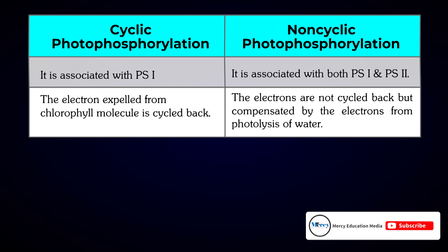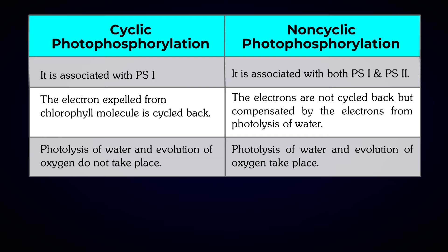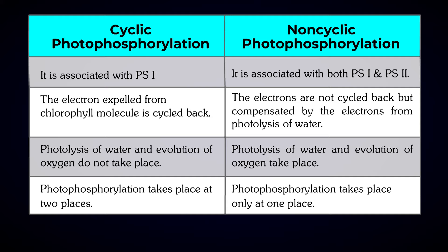In cyclic photophosphorylation, the photolysis of water and evolution of oxygen do not take place. Photolysis of water and evolution of oxygen takes place in non-cyclic photophosphorylation. In cyclic photophosphorylation, phosphorylation takes place only at one place, whereas in non-cyclic photophosphorylation, phosphorylation takes place at two places.